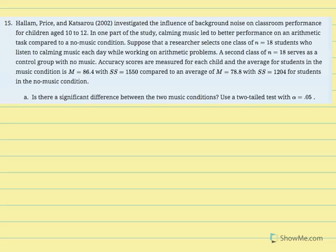Number 15: researchers investigated the influence of background noise on classroom performance for children aged 10 to 12. Calming music led to better performance on arithmetic tasks compared to a no-music condition. A researcher selects one class of 18 students who listen to calming music while working on arithmetic problems, and a second class of 18 serves as a control group with no music. The music group averaged 86.4 with SS equal to 1550; the no-music group averaged 78.8 with SS equal to 1204. Is there a significant difference? Use a two-tailed test with alpha equal to 0.05.